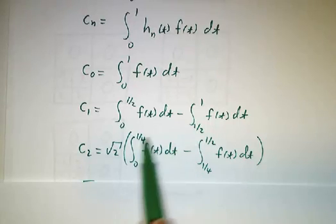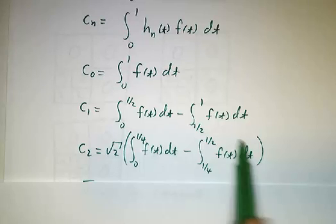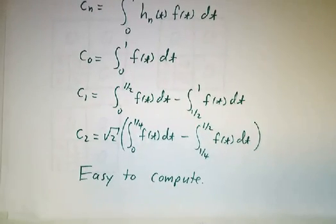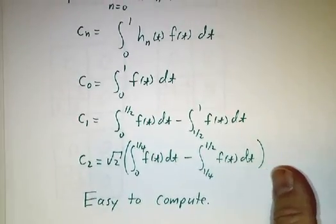You just wind up integrating the original function over an interval minus the integral of the original function over a slightly different interval. So the coefficients are very easy to compute and this gives us resolution of a signal.